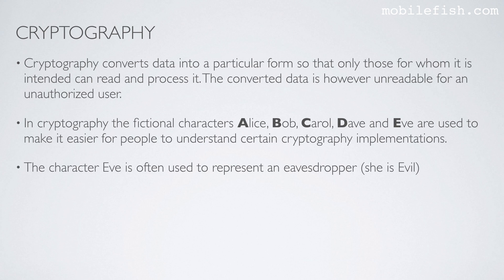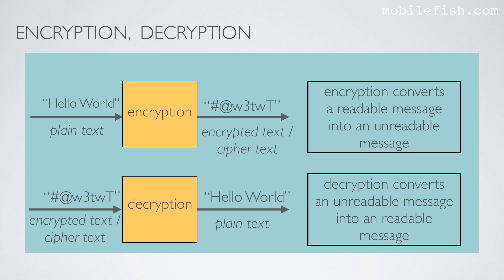The character Eve is often used to represent an eavesdropper because she is evil. In this demo, Hello World is used as input for this encryption method, and the encryption method encrypts the Hello World string into a scrambled text. The scrambled text is called an encrypted text or a cipher text.